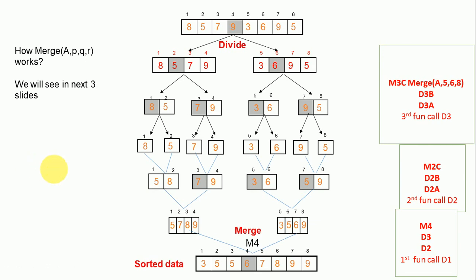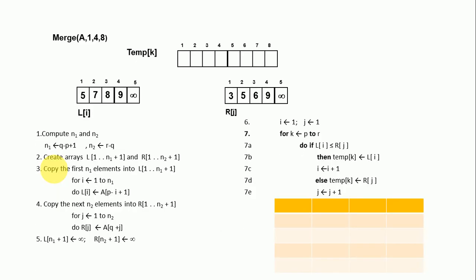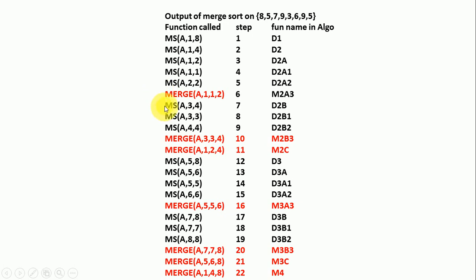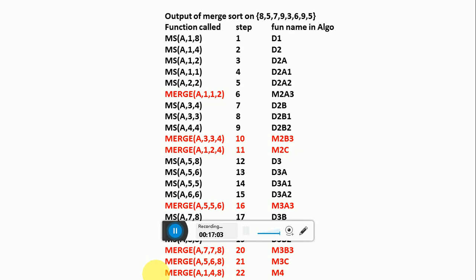In the next slide we will discuss the merge function in detail. This was the output of merge sort. I hope you now understand what D1, D2, D2a, D2a1 represent — this is the step-by-step execution of all function calls for merge sort and merge. The first function was merge_sort with index 1 to 8, then q was computed, MS(1,4) was called, breaking down into MS(1,1) and MS(2,2). When individual elements were obtained, the merge procedure occurred, then D2b for the right sub-part of D2. Thanks for watching.